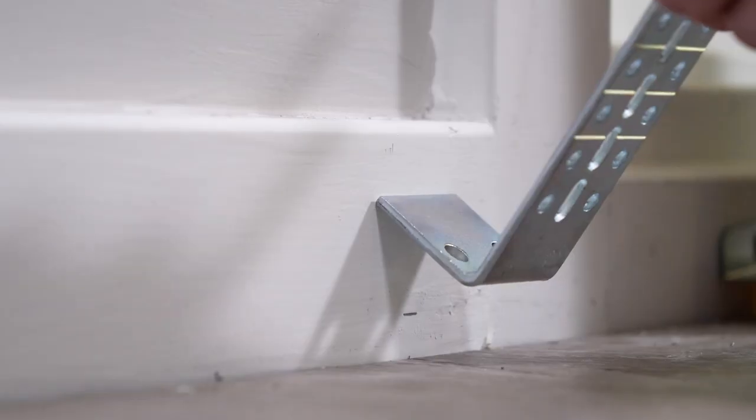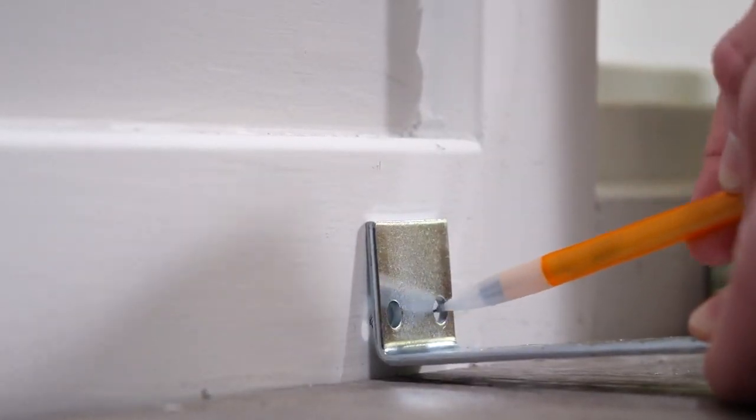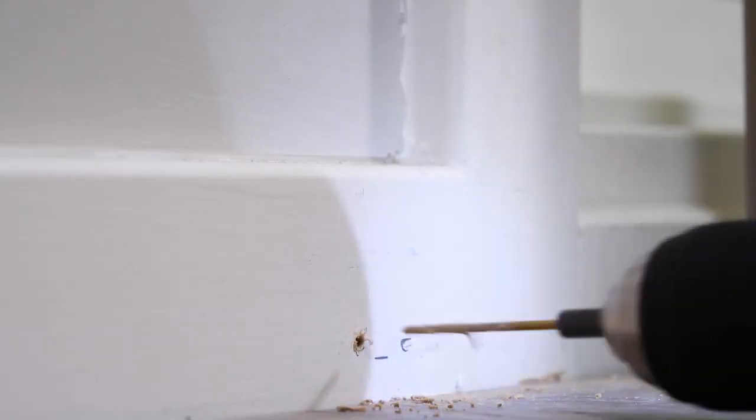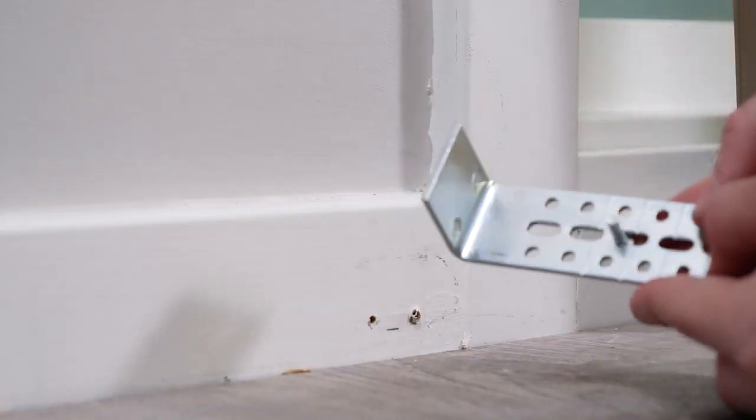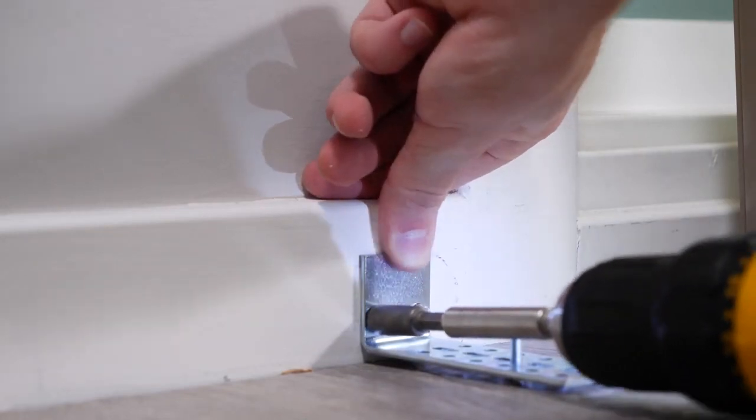If you used extension brackets for the headrail, you'll need to use one here too. Center it at your mark and use your pencil to mark where the screws will go. Pre-drill the screw holes first. Place a small bolt upwards where your rail will be set and then secure the extension bracket to the wall with two screws.